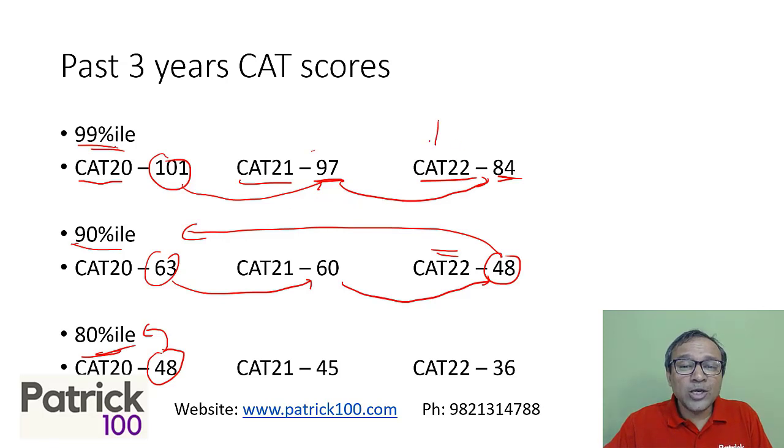a lot of people who went to CAT 22, for example, wanted to score 99 percentile, expected a score to be around 97. No one expected the marks to go down to 84. Right? A drastic drop. So people who were not able to reach that 97 mark got stressed in the exam and underperformed in the exam. But people who had gone with an open mind saying, okay, let me solve as much as possible and come out, were able to reach that mark.